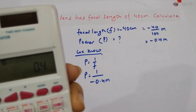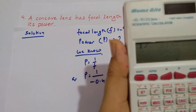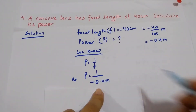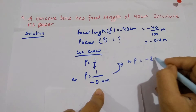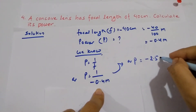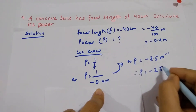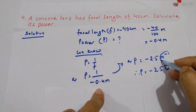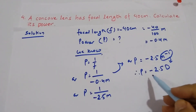Using the calculator: 1 divided by 0.4 equals 2.5. So P equals minus 2.5. When meter goes up it becomes m power minus 1, which is diopter D. Therefore P equals minus 2.5 D. The negative sign confirms it is a concave lens — don't forget this.